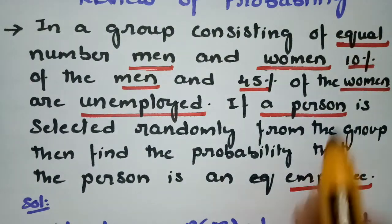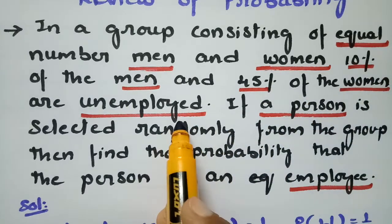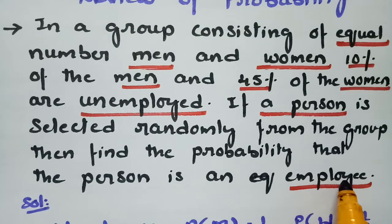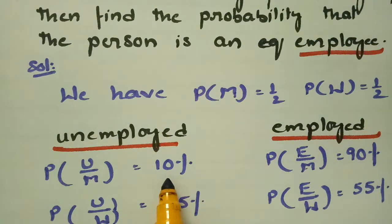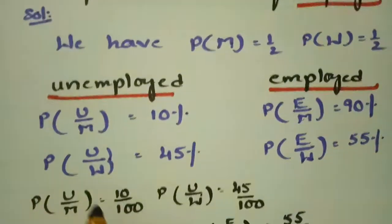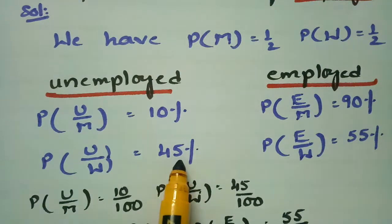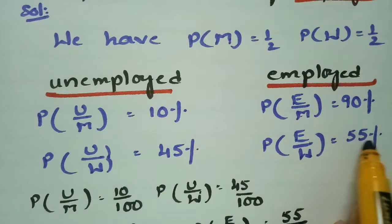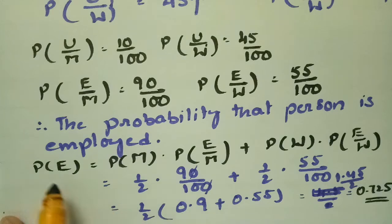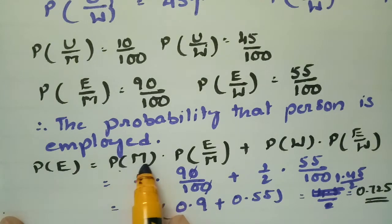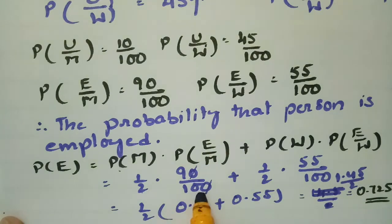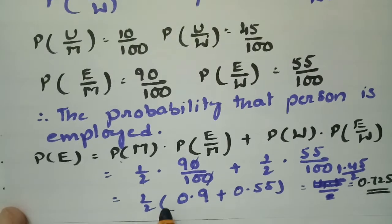The men and women are equally distributed. 10% of the men and 45% of the women are unemployed, so 90% of men and 55% of women are employed. The probability of E equals: probability of men is half, probability of women is half, employed men is 90%, and employed women is 55%. After calculating, this gives 0.725.